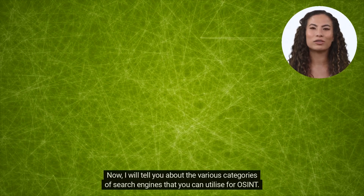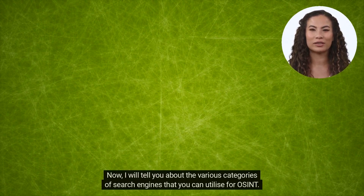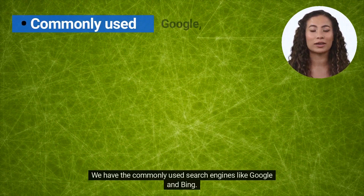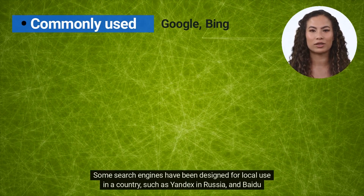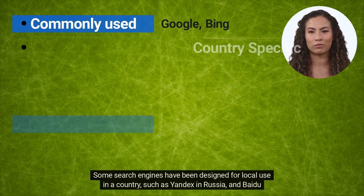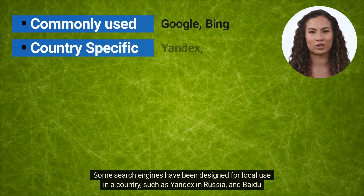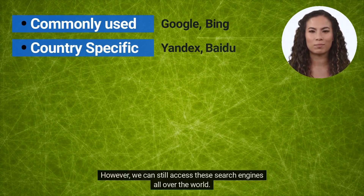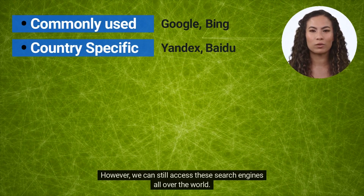Now I will tell you about the various categories of search engines that you can utilize for OSINT. We have the commonly used search engines like Google and Bing. Some search engines have been designed for local use in a country, such as Yandex in Russia and Baidu in China. However, we can still access these search engines all over the world.